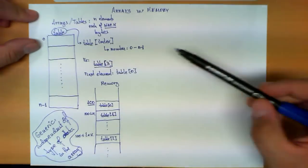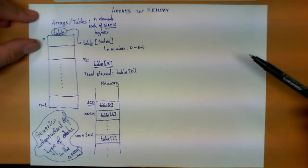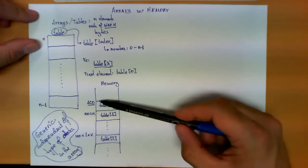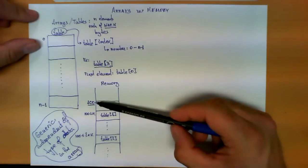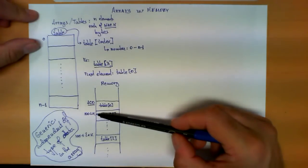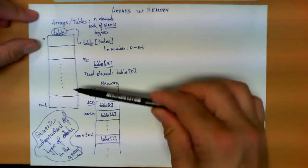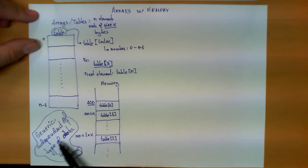However, if these elements, instead of being integers, are complex elements that require, for example, 50 bytes each, then the first element will still be stored in position 100, the next one in 150, next one in 200, which is 100 plus 2 times 50, so on and so forth. This notation that we have described here is independent of the type of data stored in the array.